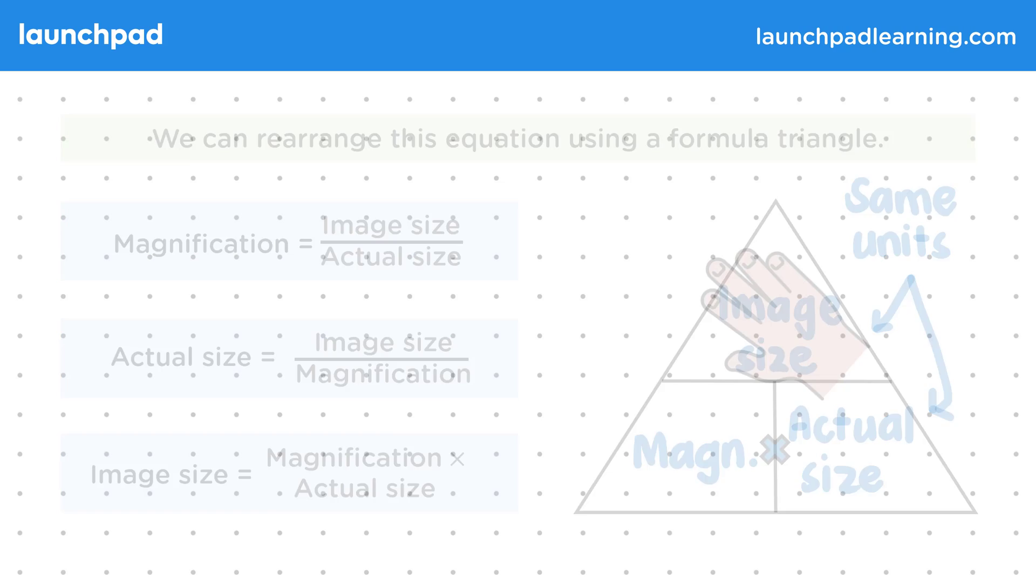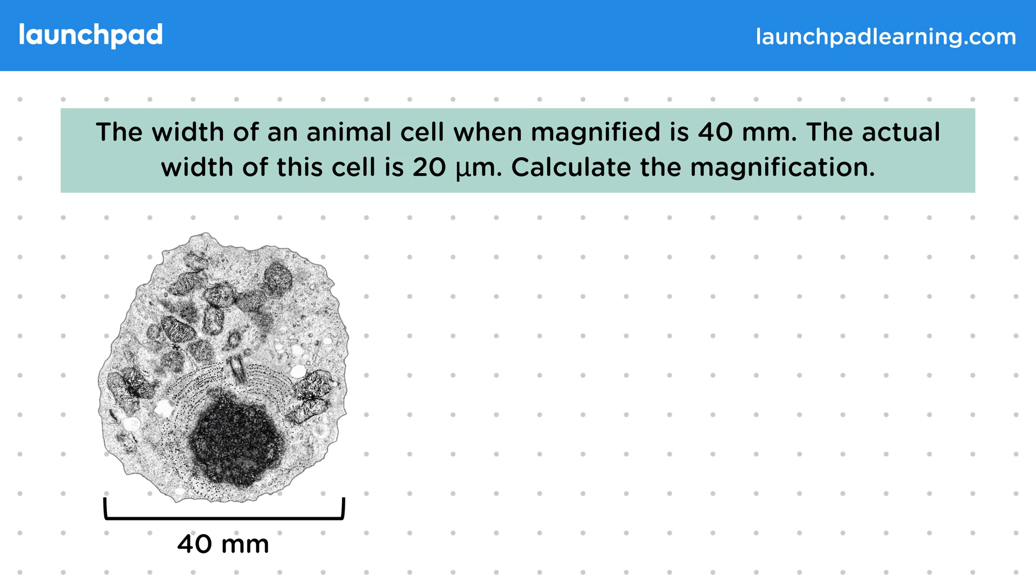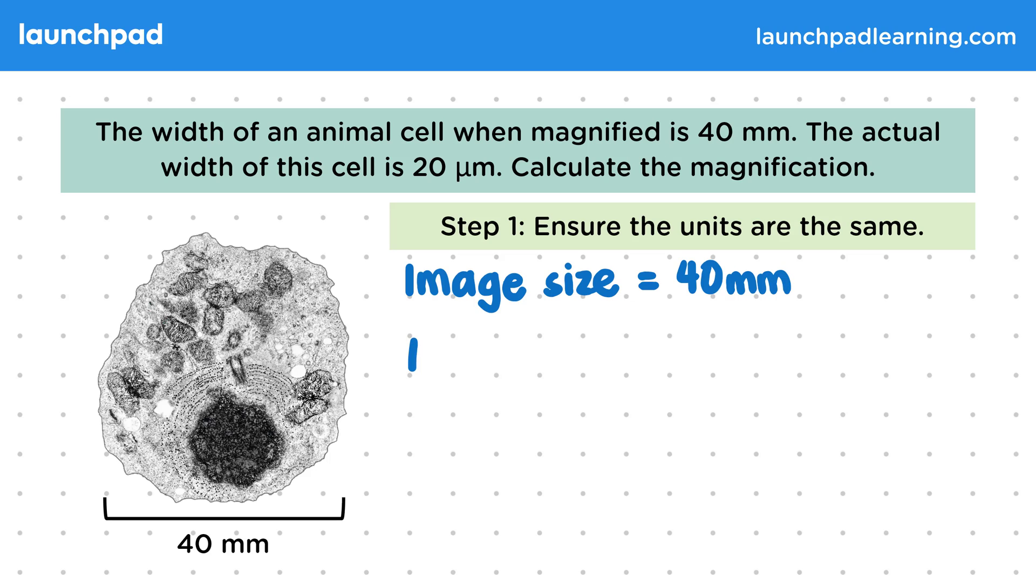So how can we use this equation in practice? The width of an animal cell when magnified is 40 millimetres. The actual width of this cell is 20 micrometres. Calculate the magnification. Here's the image of our animal cell when it's been magnified. The first thing we want to do is ensure that the units are the same. Our image size is 40 millimetres, but the actual size of the cell is 20 micrometres.